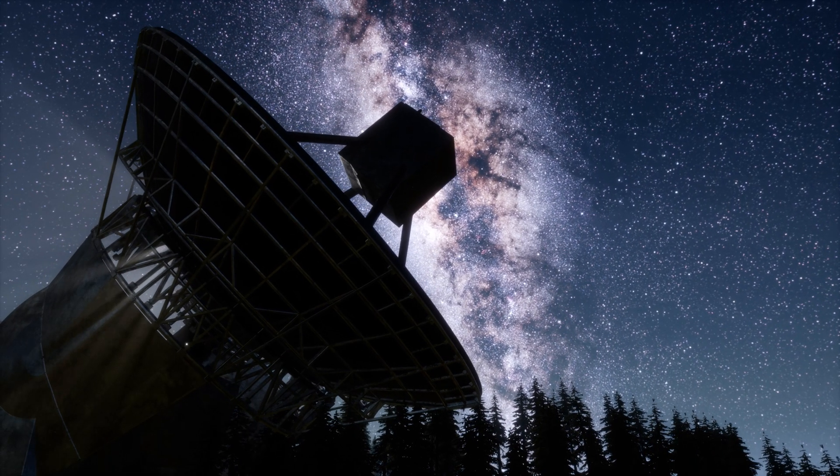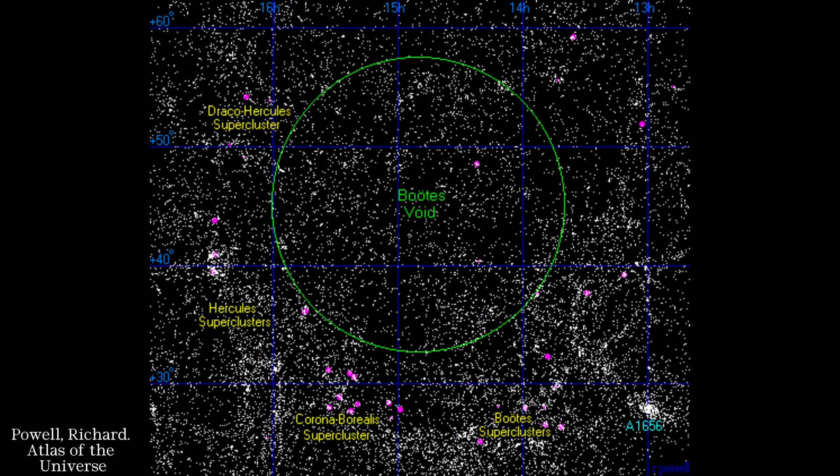This region was discovered in 1981 by the astronomer Robert Kirchner and his team. The Boötes Void is sometimes referred to as the Great Void. It's an enormous spherical region of space with very few galaxies in it. It's located approximately 700 million light-years away from Earth, in direction of the Boötes constellation, from which it got its name.